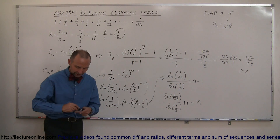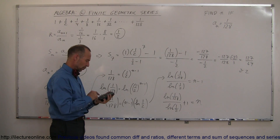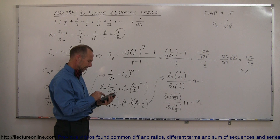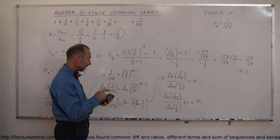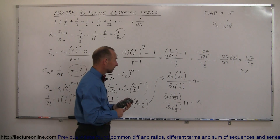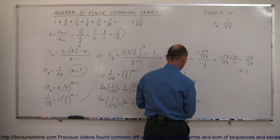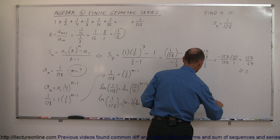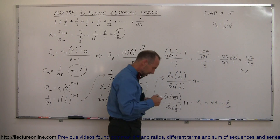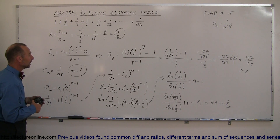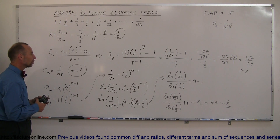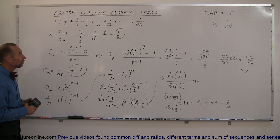Using a calculator: take the natural log of 1/128, divide by the natural log of 0.5, then add 1. That gives us 7 plus 1, which equals 8. So the 8th term in this series is 1/128. That's a neat way to find which term number you're dealing with when given a specific value in the series.